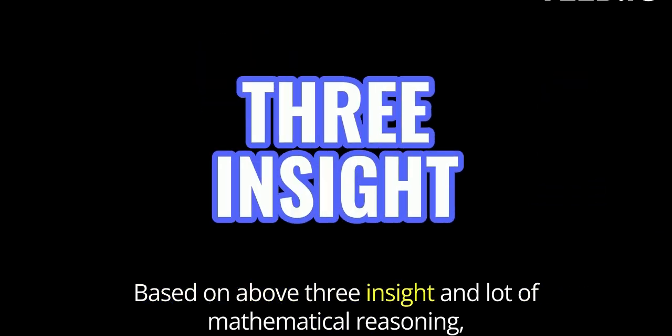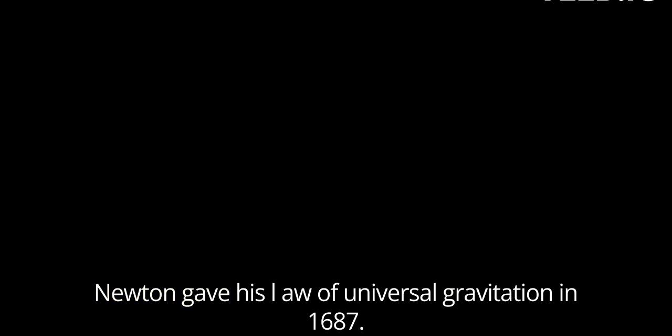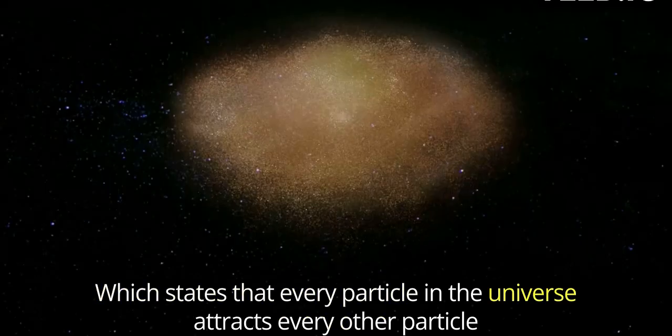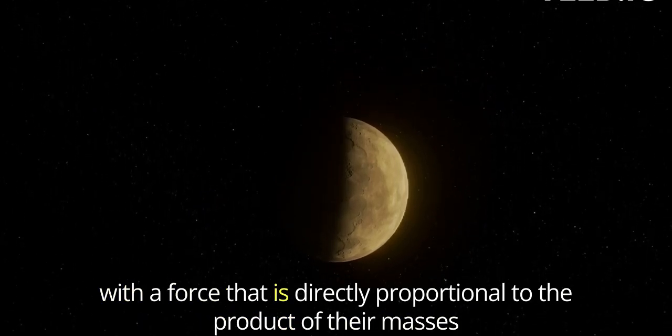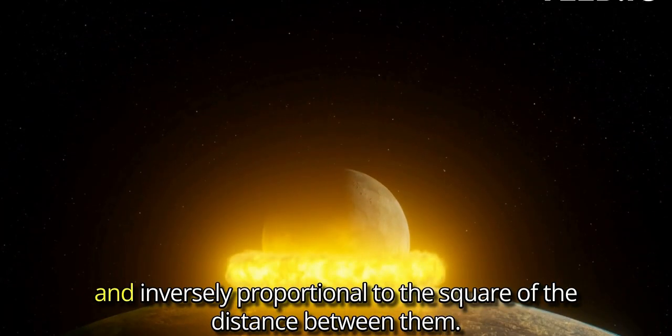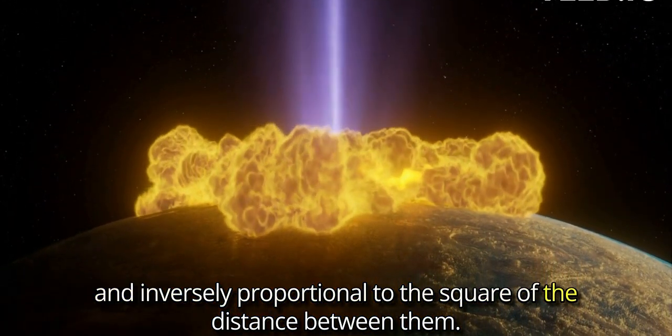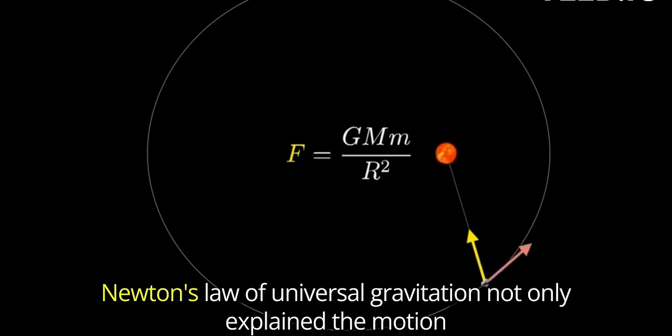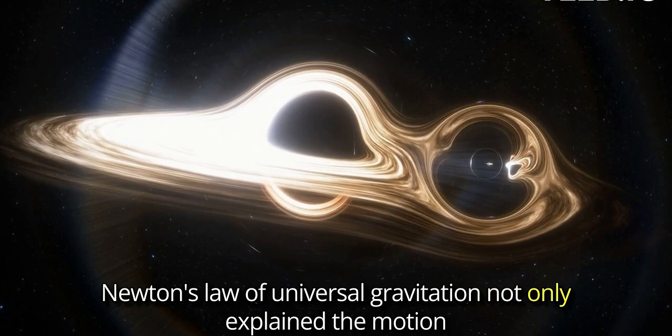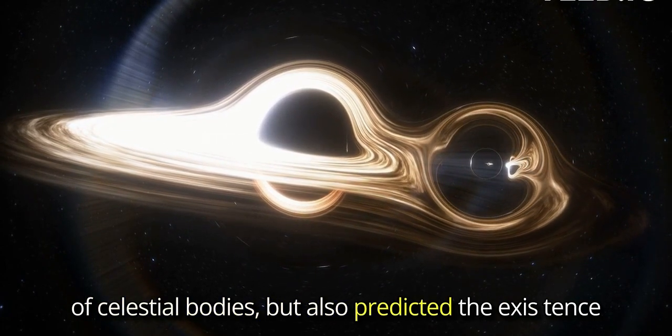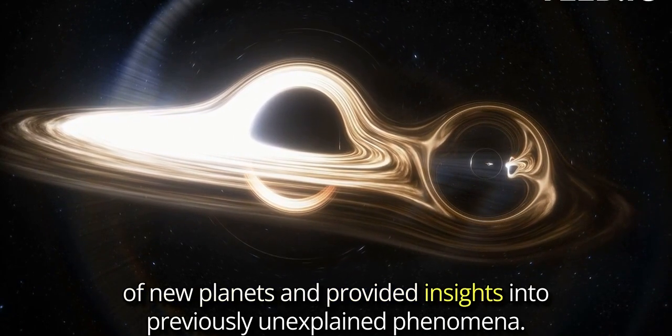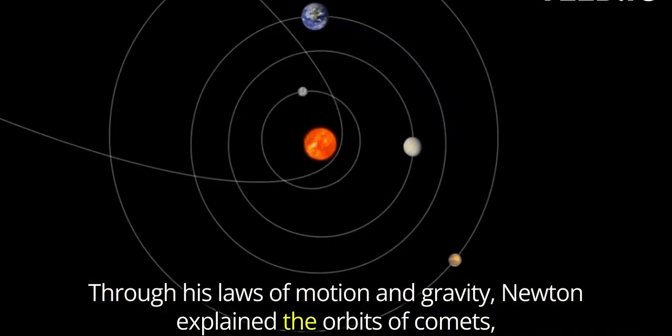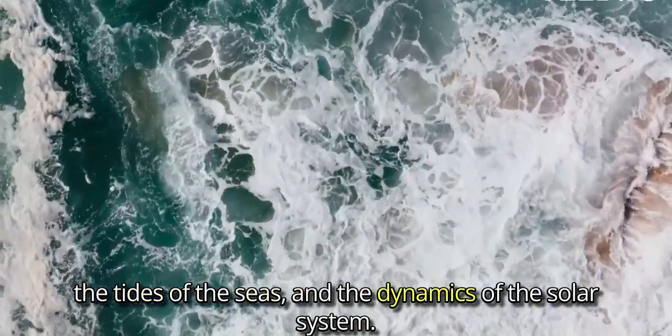Based on above three insights and lot of mathematical reasoning, Newton gave his law of universal gravitation in 1687, which states that every particle in the universe attracts every other particle with a force that is directly proportional to the product of their masses and inversely proportional to the square of the distance between them. Expressed mathematically as G m₁ m₂ upon r squared, Newton's law of universal gravitation not only explained the motion of celestial bodies, but also predicted the existence of new planets and provided insights into previously unexplained phenomena. Through his laws of motion and gravity, Newton explained the orbits of comets, the tides of the seas and the dynamics of the solar system.